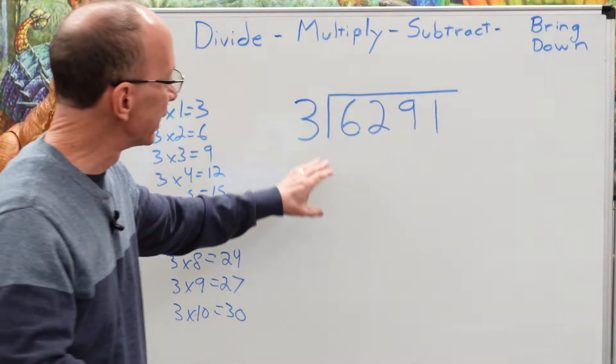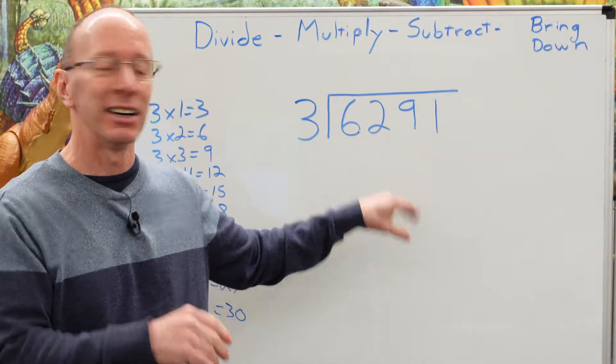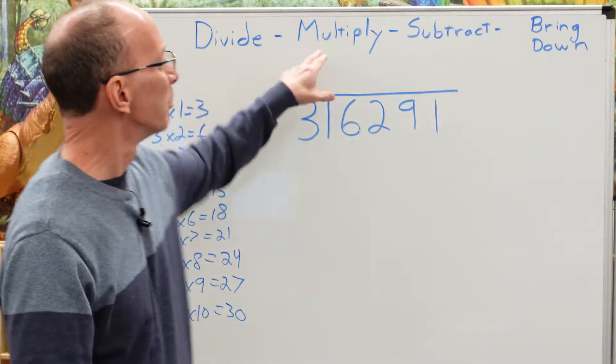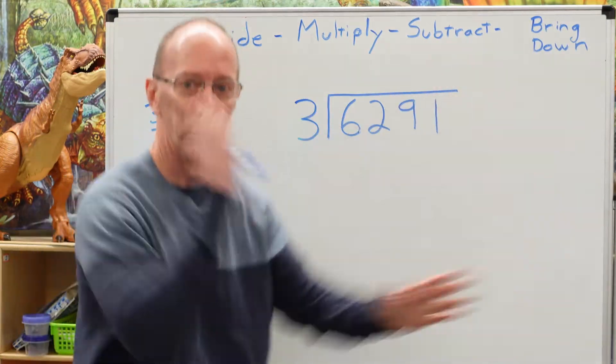Remember, when we divide numbers, like this is a big number right here, we use this right here. Divide, multiply, subtract, and bring it down.